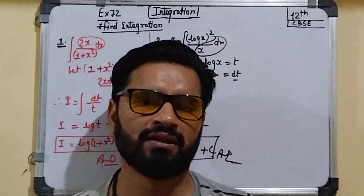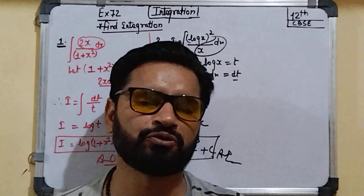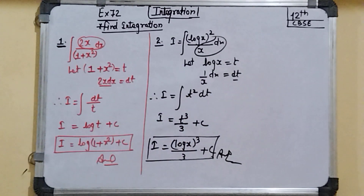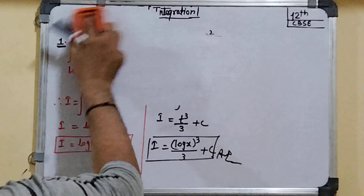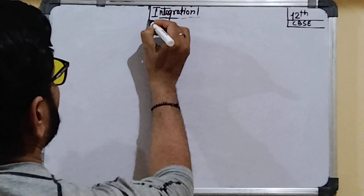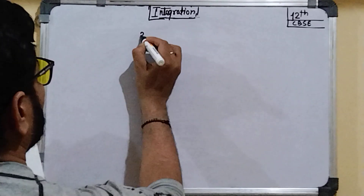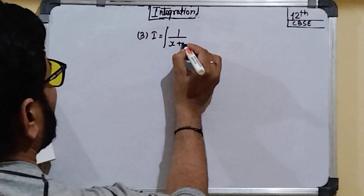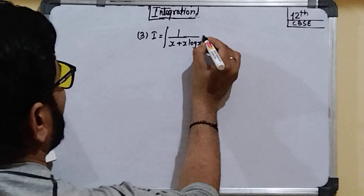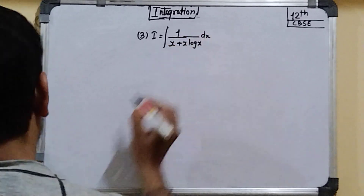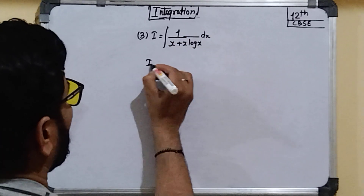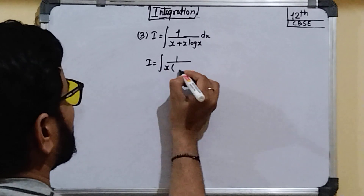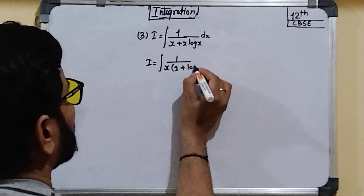The third problem is the integration of 1 upon (x · x · log x) dx. In this case, x is taken as common, and we get 1 + log x in the expression.